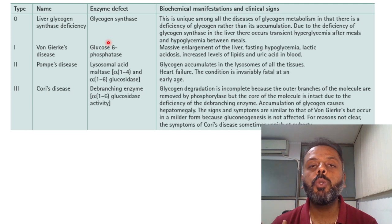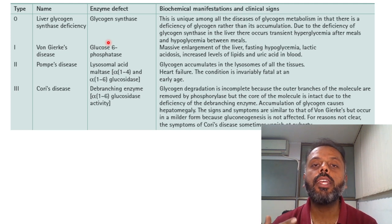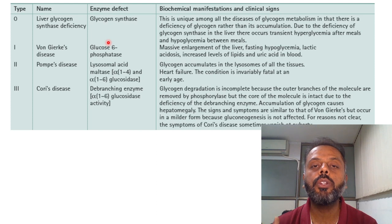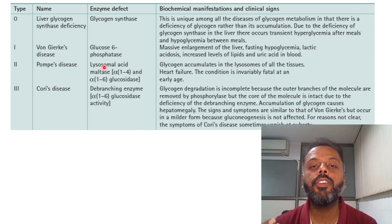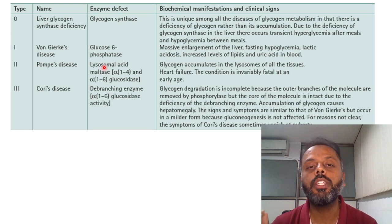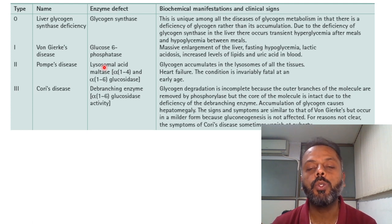Type 2 Glycogen Storage Disease is known as Pompe disease. It occurs due to deficiency of acid maltase enzyme in the lysosome, and is characterized by the accumulation of normal glycogen in the lysosomes of all tissues.